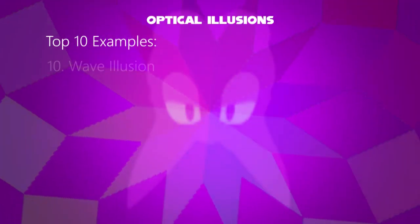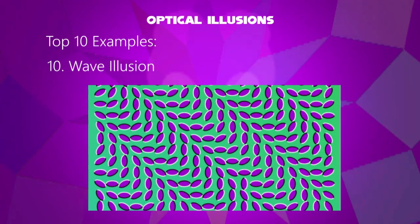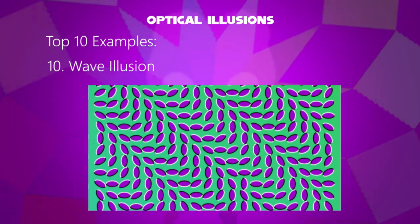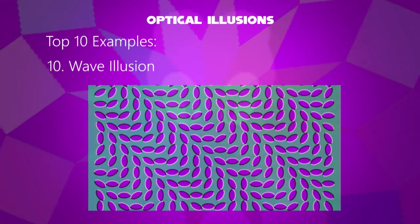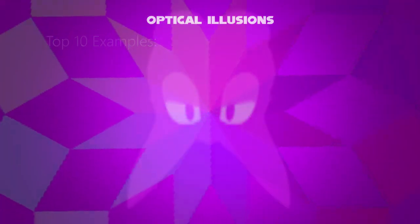Tenth example: the wave illusion. It looks like it's going to wave, but it shows that a contrasted outline color causes the image to appear to move here and there. That is why it is an art of optical illusion.